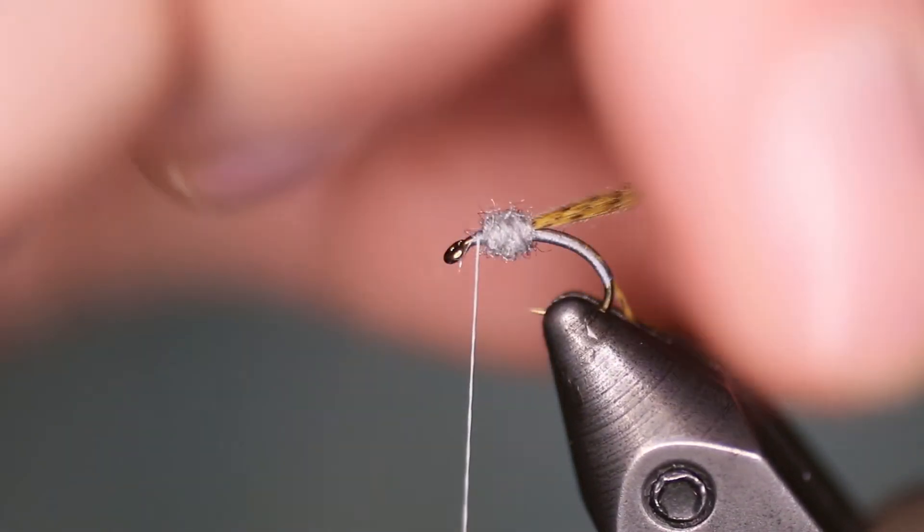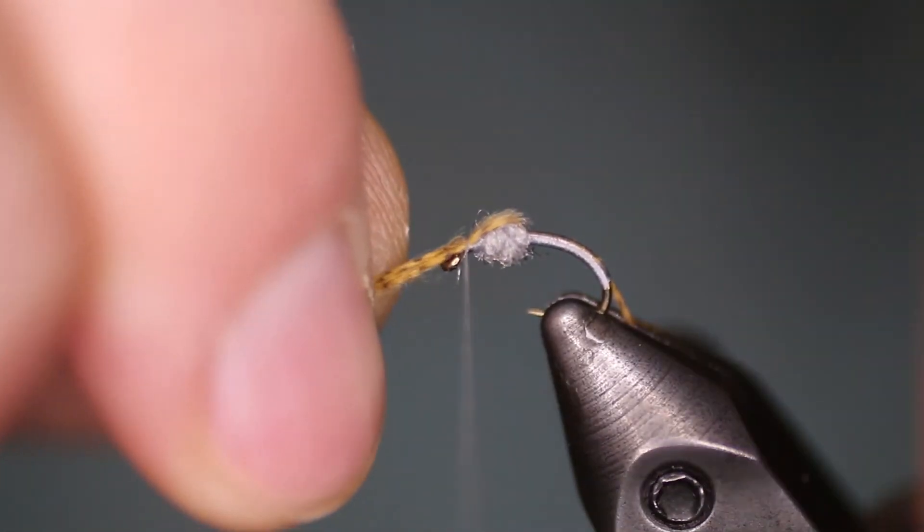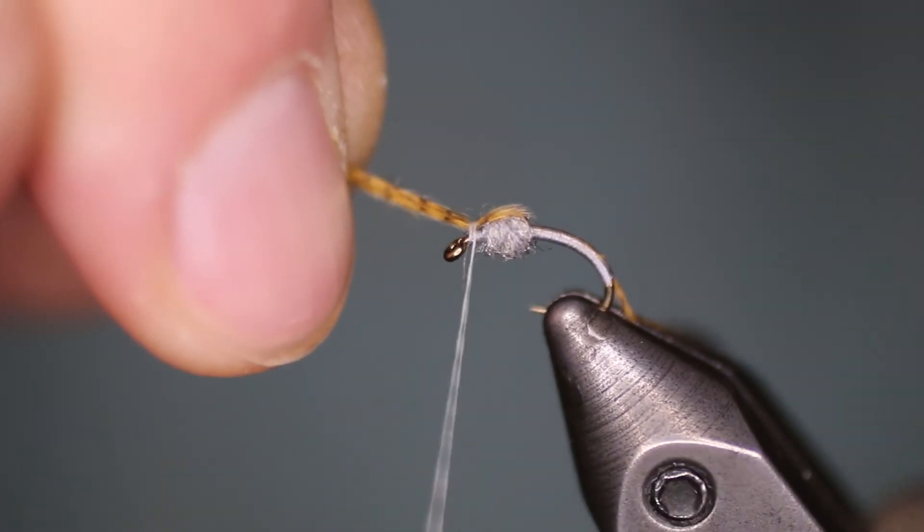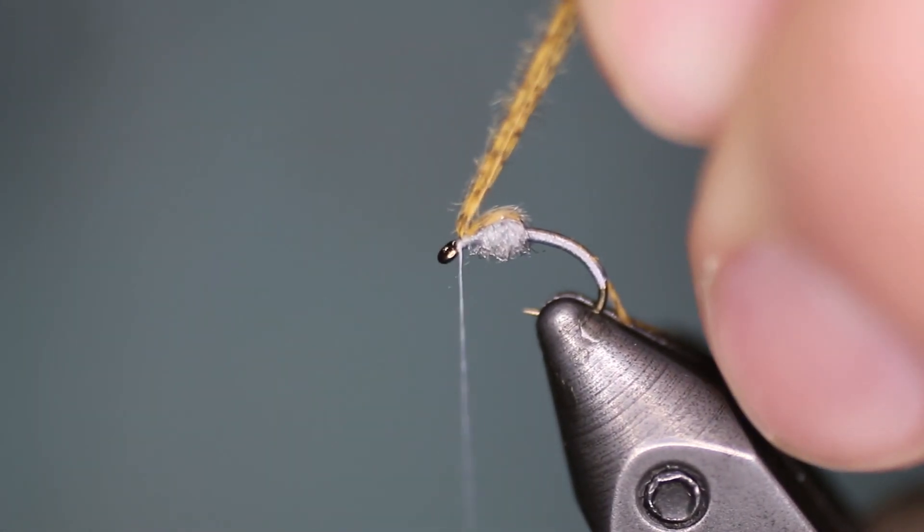Once you've created the thorax, you want to pull the wing case over, capture it with a couple turns of thread, and then we'll trim off the extra.